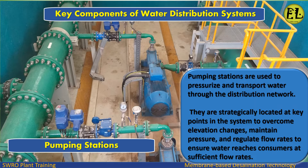Pumping stations are used to pressurize and transport water through the distribution network. They are strategically located at key points in the system to overcome elevation changes, maintain pressure, and regulate flow rates to ensure water reaches consumers at sufficient flow rates.